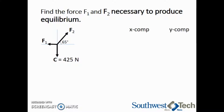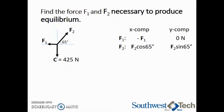Since force F1 is acting strictly in the negative x direction, the x component will be negative F1, and the y component is 0. Since F2 is acting at an angle, the x component is F2 multiplied by the cosine of 65 degrees, since that is the angle the force is acting at. The y component is F2 multiplied by the sine of 65 degrees.